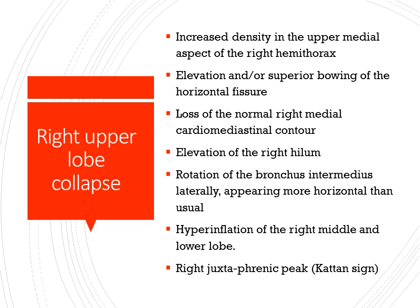Collapse of the Right Upper Lobe shows findings of increased density in the upper medial aspect of the right hemithorax, elevation and superior bowing of the horizontal fissure, loss of normal right medial cardiomediastinal border, elevation of the right hilum, rotation of the bronchus intermedius making it more horizontal, hyperinflation of the right middle and lower lobe, and right juxtaphrenic peak sign.